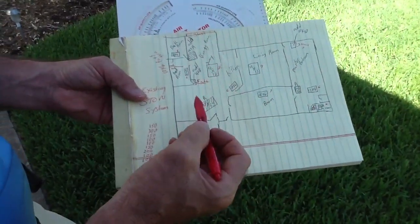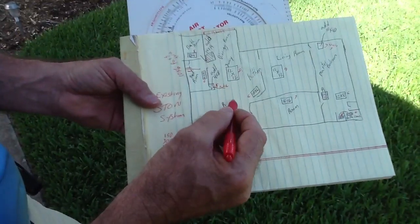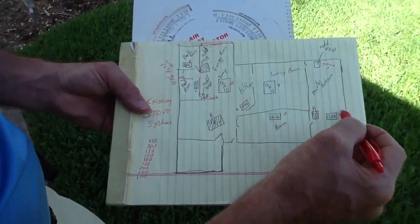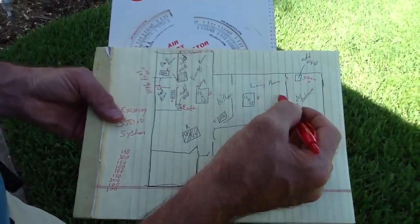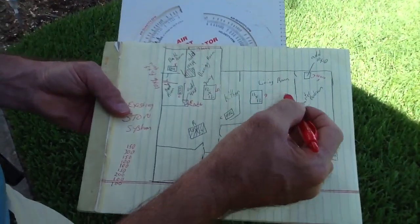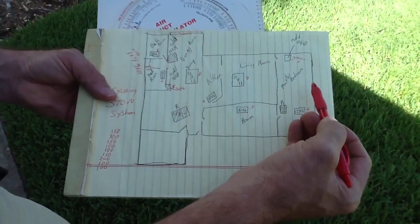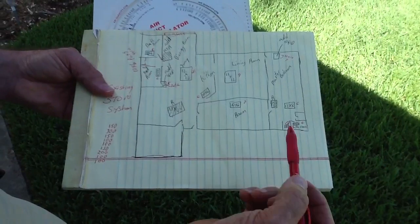We've laid out where the returns are because that's critical. What you want to do is put your air on the perimeter and as the air flows through it scrubs all the way through the house and keeps the customer comfortable because heat chases cold.